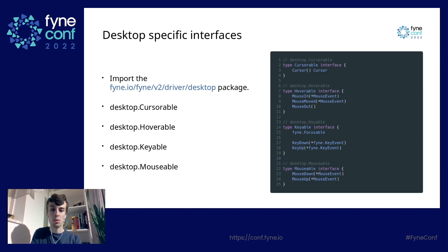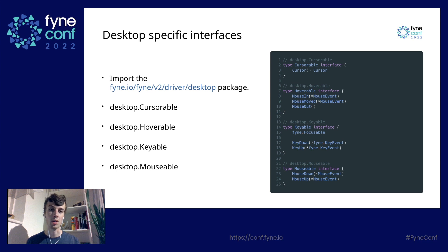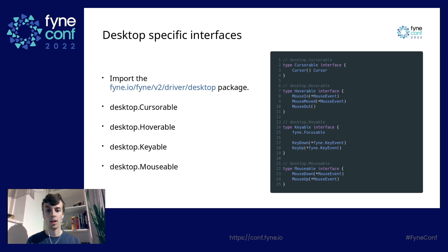Moving on to the desktop package: we can import fyne.io/fyne/v2/driver/desktop, which provides driver-specific interfaces for desktop devices. The desktop.Cursorable interface allows the widget to change the cursor when you move over it — for example, a resize cursor when resizing, or an I-beam cursor when selecting text. We also have desktop.Hoverable, which allows the widget to detect when a mouse moves in, moves within, or moves out of the object.